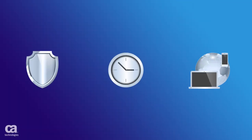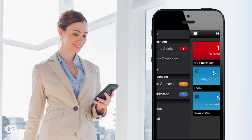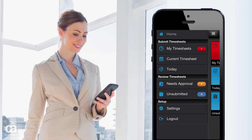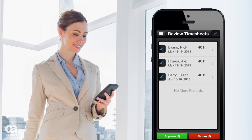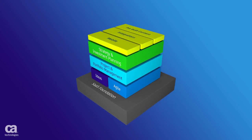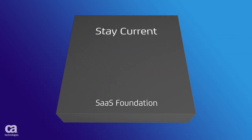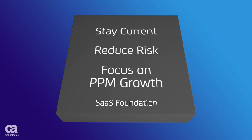With CA Clarity PPM On Demand, your data is secure and available 24-7. You can access the system anywhere you're online. And with 75% of the workforce now mobile, the CA Clarity Mobile Time Manager app makes it easy for your teams to connect on the go. A solid SaaS foundation helps you improve your time to value and realize the benefits of effortlessly staying on current releases and reducing risk so you can focus on growth.